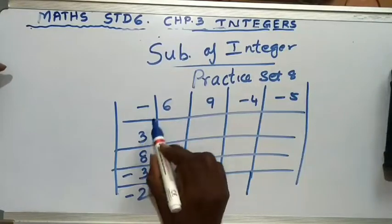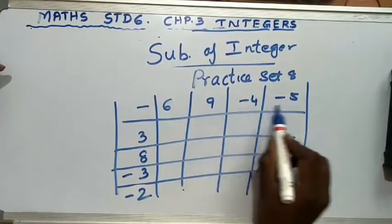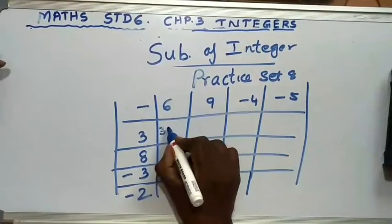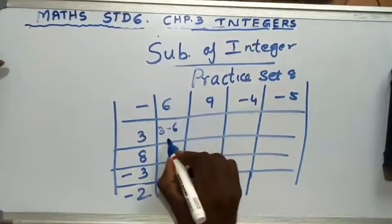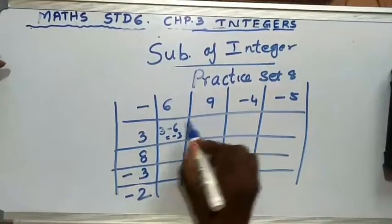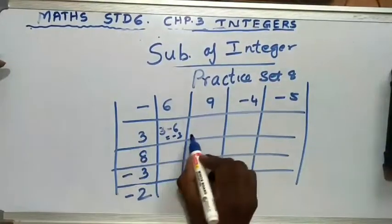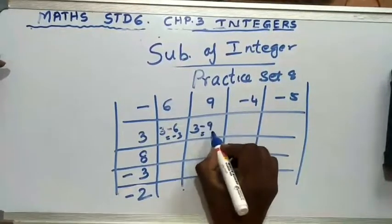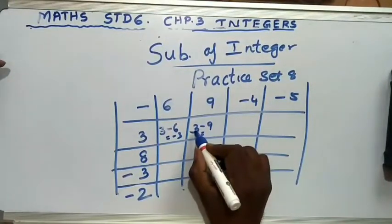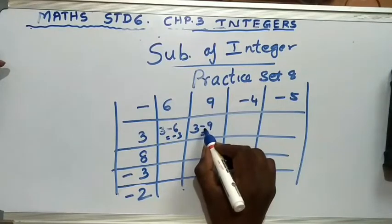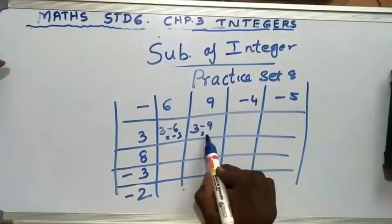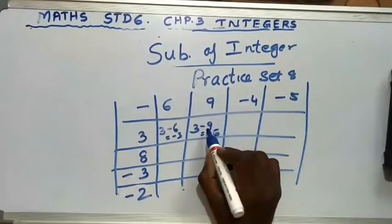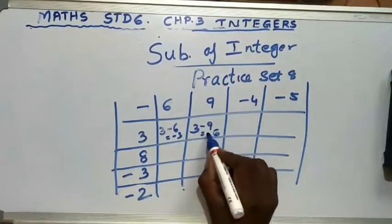First, take 3 and subtract with 6, 9, minus 4, and minus 5. So 3 minus 6 is minus 3. Next, 3 minus 9: left side plus, right side minus — so subtract. 9 minus 3 is 6. The greater number is 9 and 9 has a minus sign, so the answer is minus 6. Then 3 minus (minus 4): write minus in a bracket with minus 4. Minus into minus is plus — so 3 plus 4 is 7.